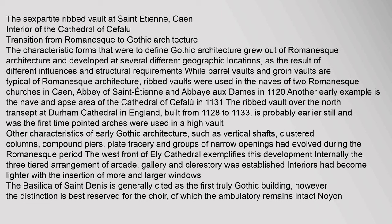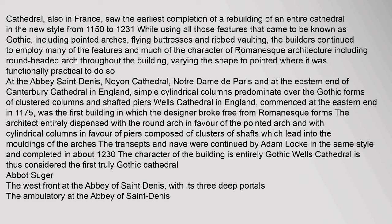Other characteristics of early Gothic architecture, such as vertical shafts, clustered columns, compound piers, plate tracery and groups of narrow openings, had evolved during the Romanesque period. The Basilica of St Denis is generally cited as the first truly Gothic building, however the distinction is best reserved for the choir, of which the ambulatory remains intact. Noyon Cathedral, also in France, saw the earliest completion of a rebuilding of an entire cathedral in the new style from 1150 to 1231. While using all those features that came to be known as Gothic — including pointed arches, flying buttresses and ribbed vaulting — the builders continued to employ many features of Romanesque architecture including round-headed arches throughout the building.